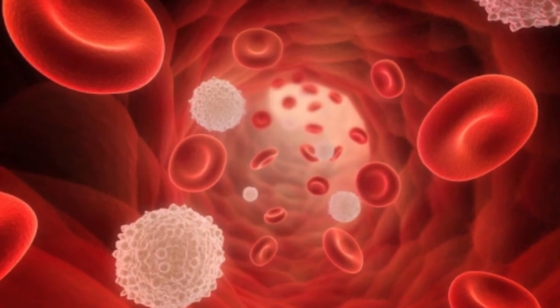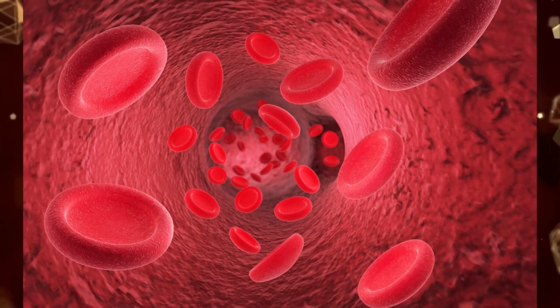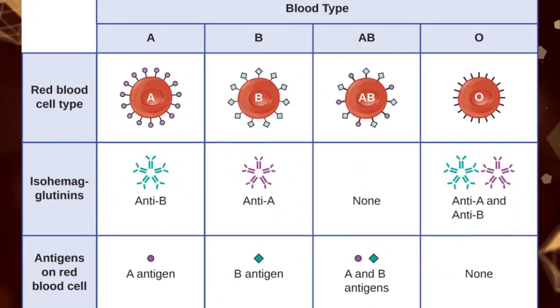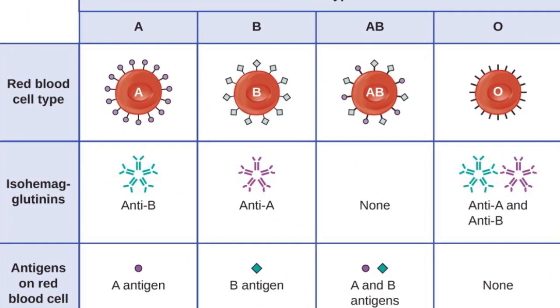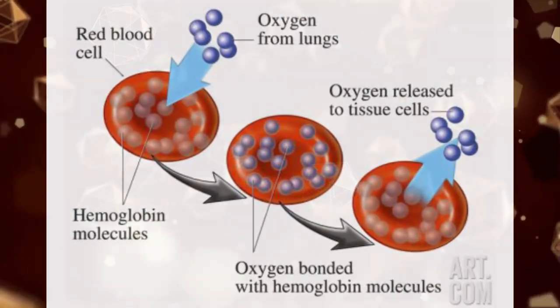Erythrocytes are elastic, non-nucleated biconcave discs. The cell possesses on its surface a number of antigens responsible for the blood groups. The function of the red cell is to transport oxygen through hemoglobin in a functional state.